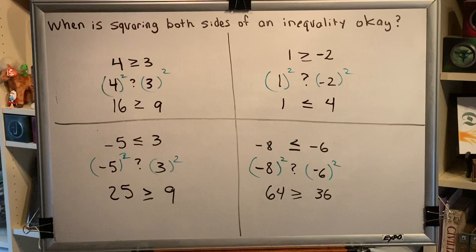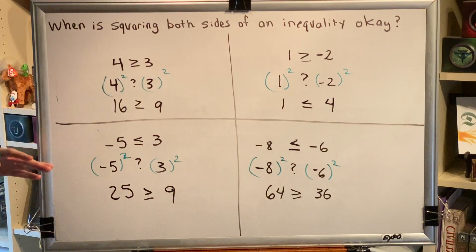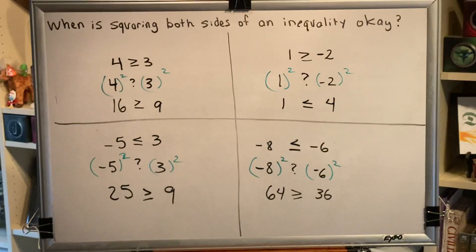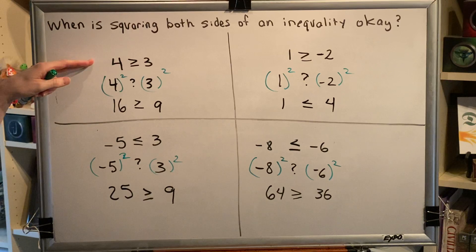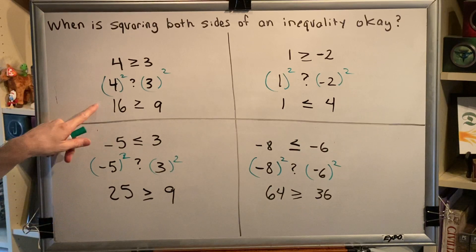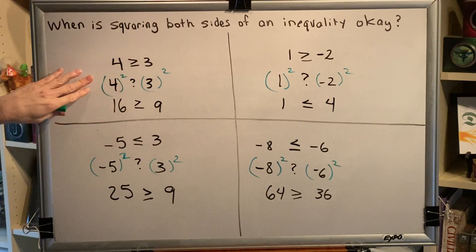So the question was when is squaring both sides of an inequality okay, and perhaps within that question is the secondary question: if we do square both sides of an inequality, do we flip the sign or not? And here's what we observe: in this particular instance if we keep the sign the same then that would be okay.